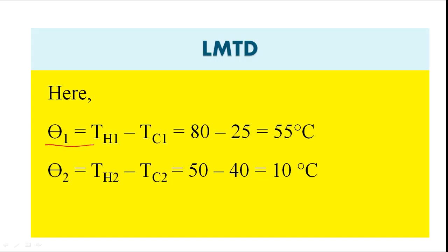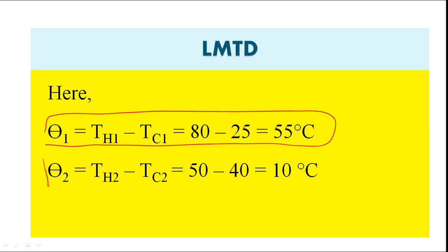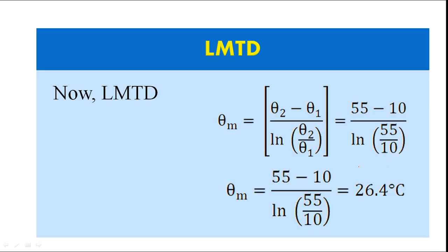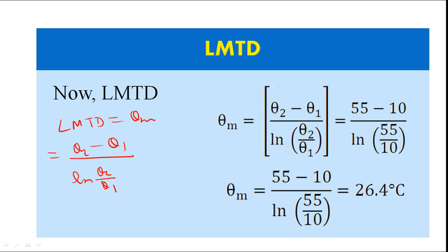Now, theta_1 = T_H1 − T_C1 = 80 − 25 = 55°C, and theta_2 = T_H2 − T_C2 = 50 − 40 = 10°C. We have calculated theta_1 and theta_2. Now we can calculate LMTD. The formula is LMTD = (theta_2 − theta_1) / ln(theta_2 / theta_1), also denoted as theta_m. Substituting theta_1 = 55 and theta_2 = 10, the value of LMTD comes out to be 26.4°C.